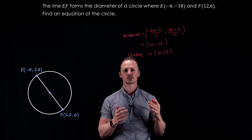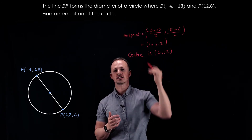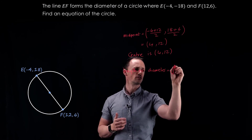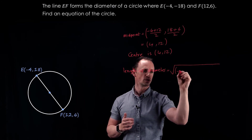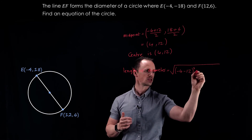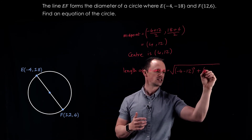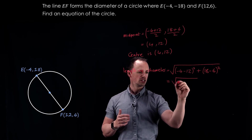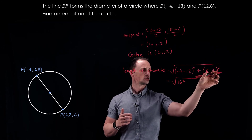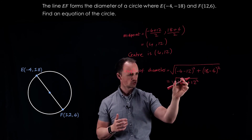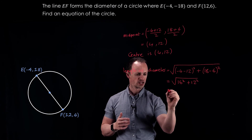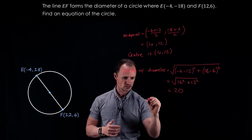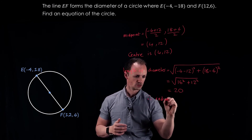Now we find the radius by first finding the diameter — the length of the line between the two coordinates. Using the distance formula: the difference between the x-coordinates is minus 4 minus 12, squared, plus the difference between the y-coordinates, 18 minus 6, squared. That gives us 16 squared plus 12 squared, which is 256 plus 144, giving the square root of 400, which is 20. So the diameter is 20 and the radius is 10.